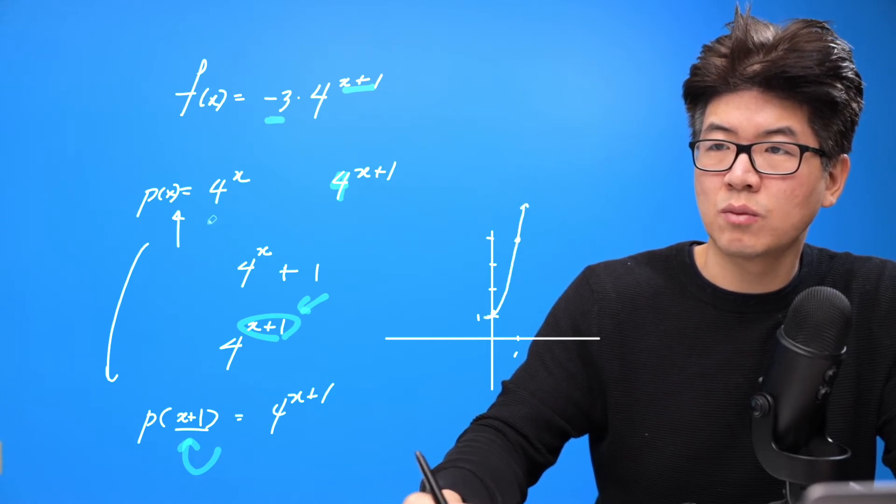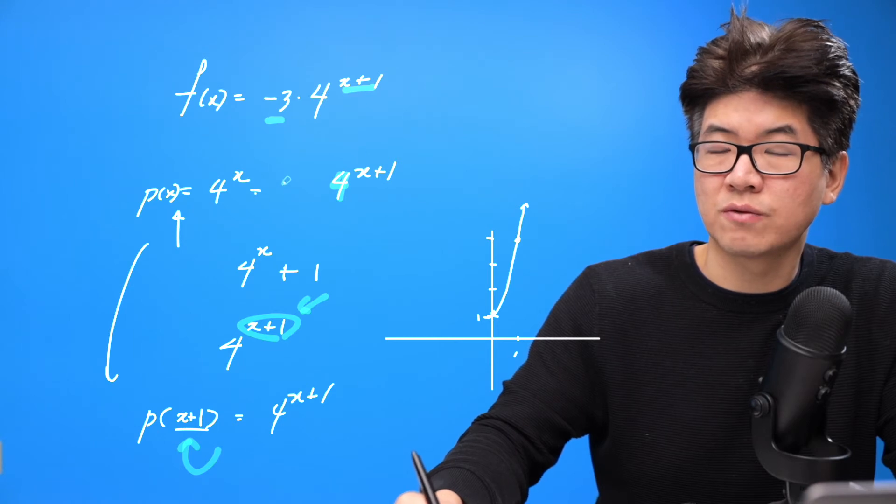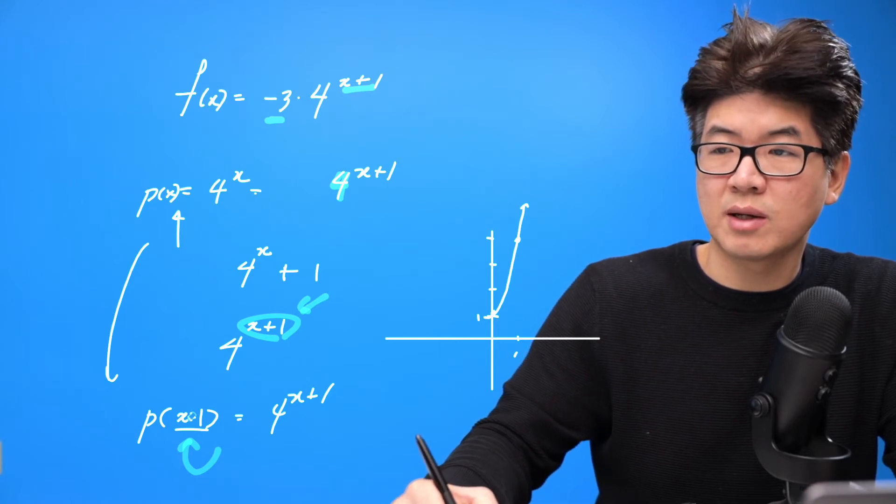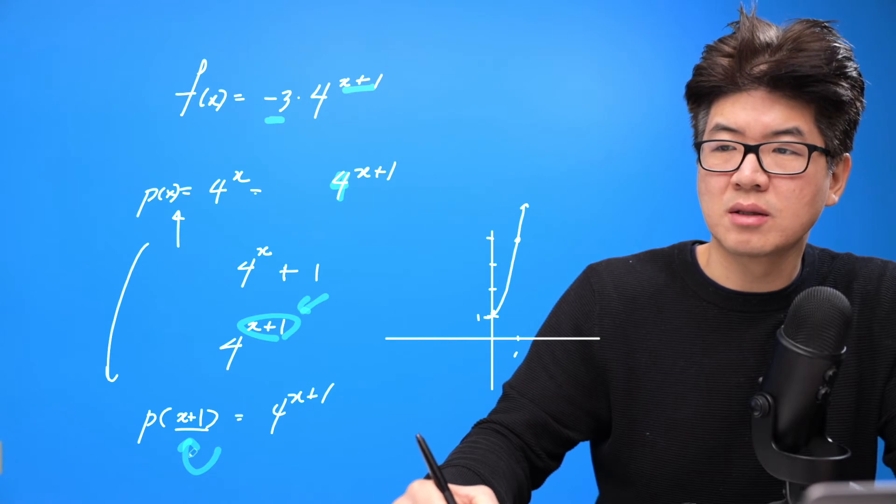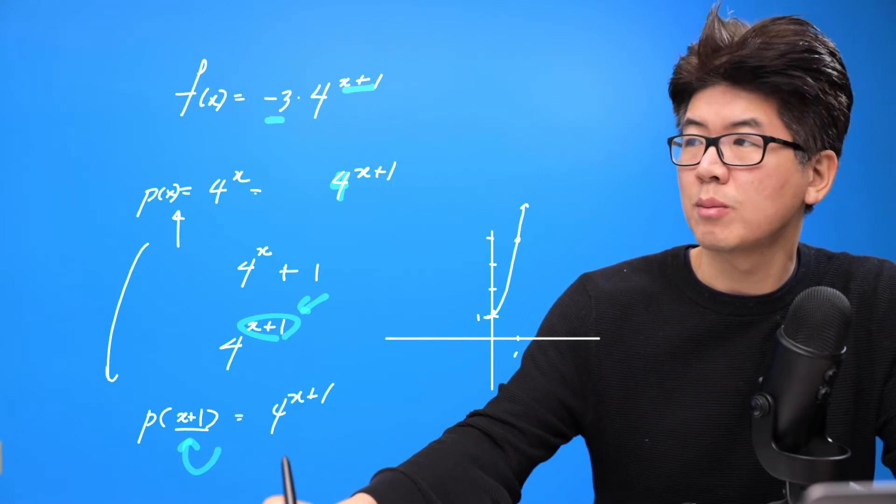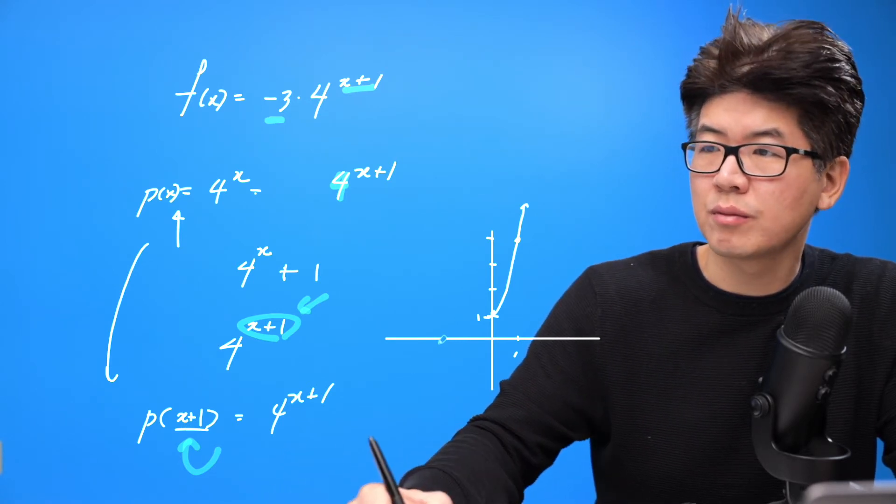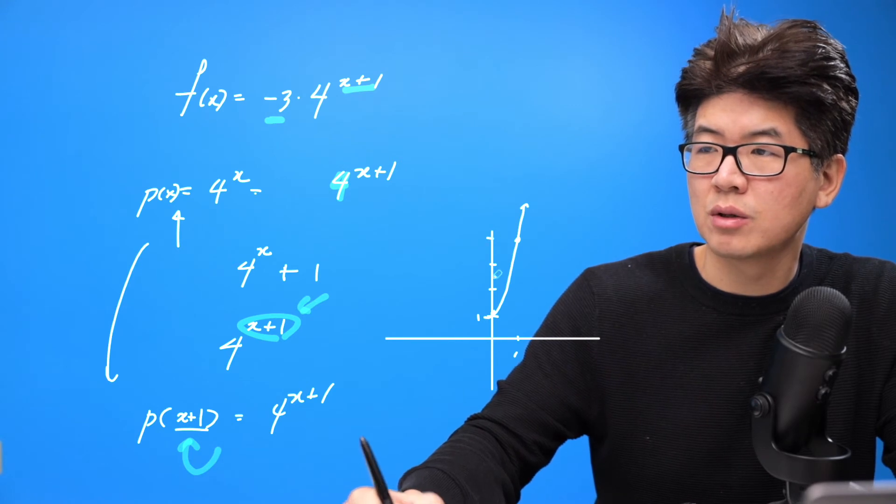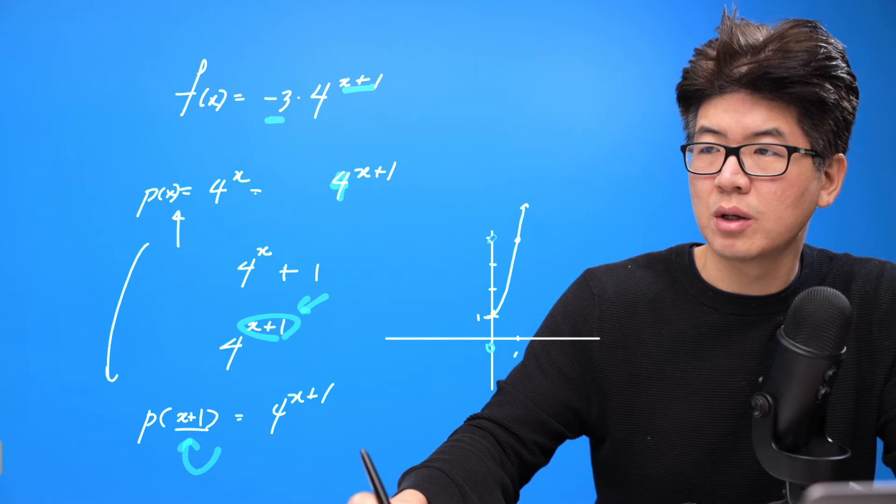So when it's one, when you put one in here, the output is four. Because it's plus one, right? Now we have to plug in zero for x. Okay, we plug in zero for x, we get four. So this, instead of happening at one, now we plug in zero, we get here.